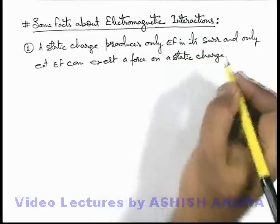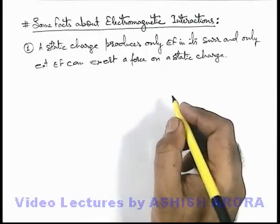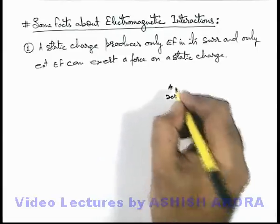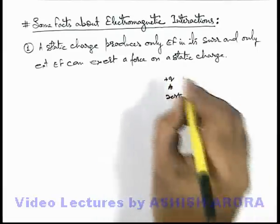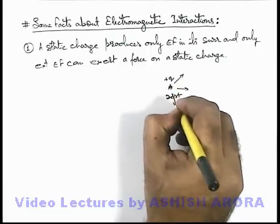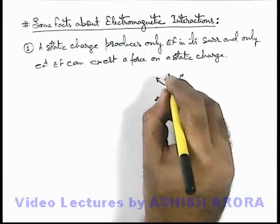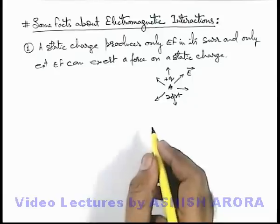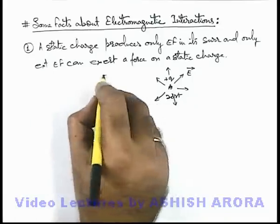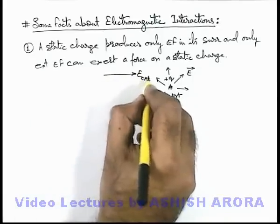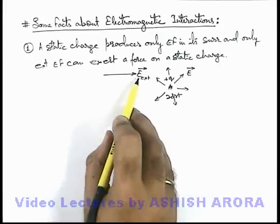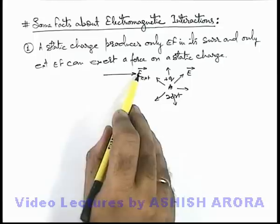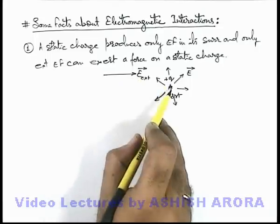This is a point which we already discussed in the section of electrostatics. Let's discuss once again. If we are given with a charge at rest — this is a plus q charge — then we know it produces an electric field in its surrounding in the radially outward direction. Say if E vector is the electric field which it produces, and say an external electric field E-external vector is applied, then this external electric field will interact with the electric field of this charge, and hence this charge experiences a force due to the external field.